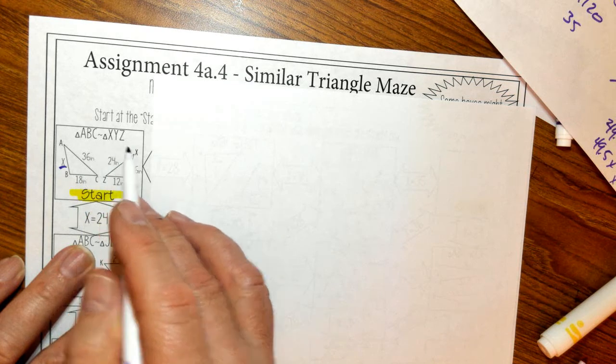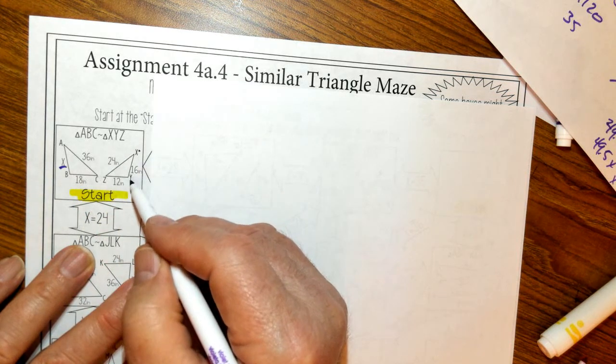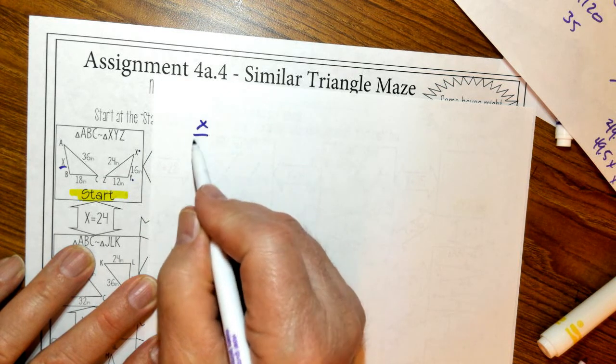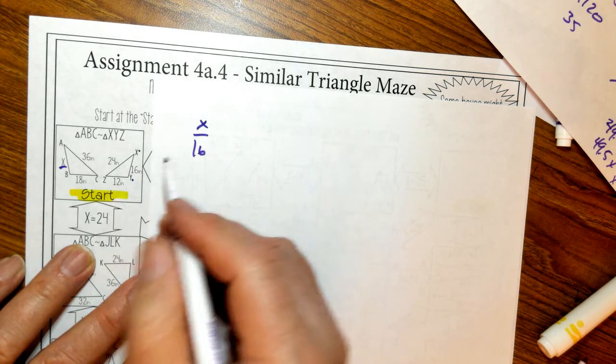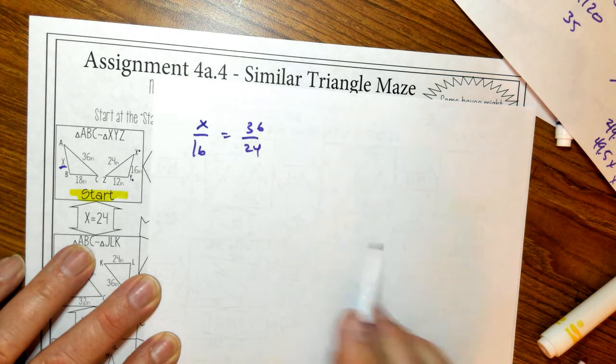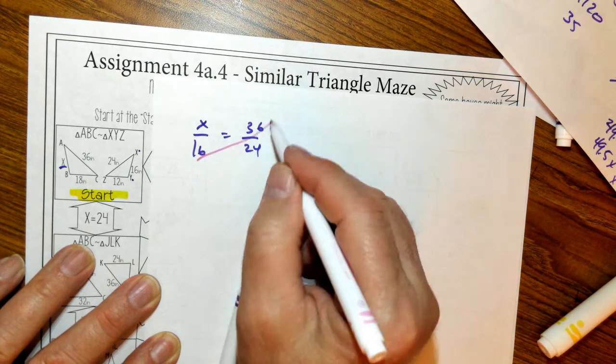So AB is going to correspond to XY. So that's my strategy: X is to 16 as 36 is to 24. And this is my cross product.